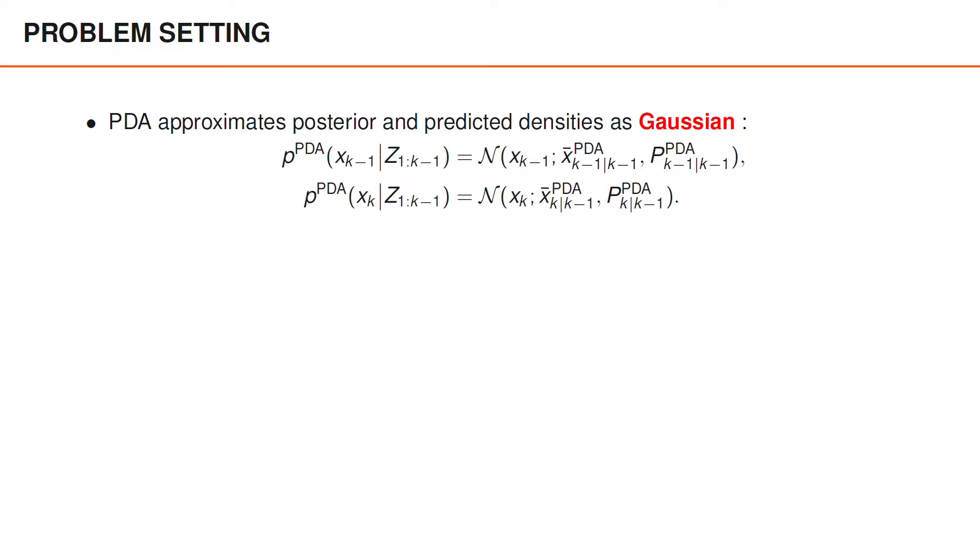Like the nearest neighbor algorithm, the probabilistic data association algorithm approximates the posterior as Gaussian after both the update and the prediction step. Of course, if the models are linear and Gaussian, the prediction step can be performed without introducing additional approximations.